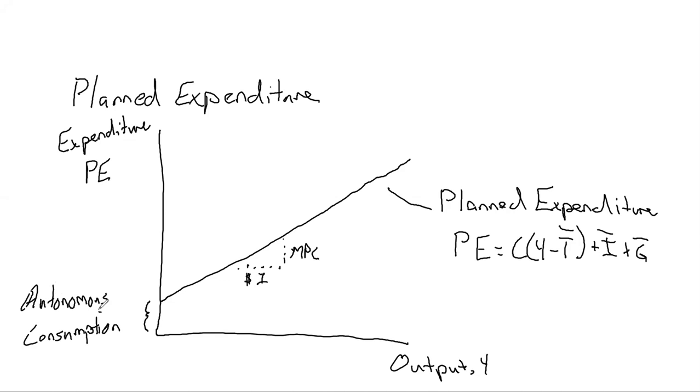And so this difference between output when it's at zero and expenditure when it's non-zero, that's autonomous consumption. Okay, so we've got that down. But now we have to graph, in addition to all that, we have to graph our equilibrium condition.